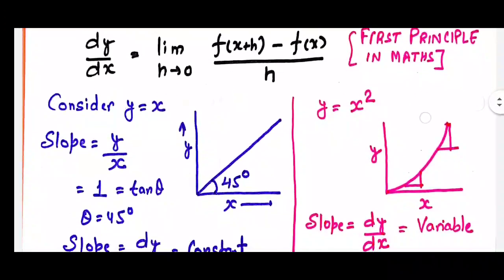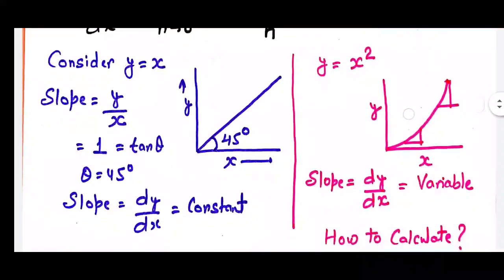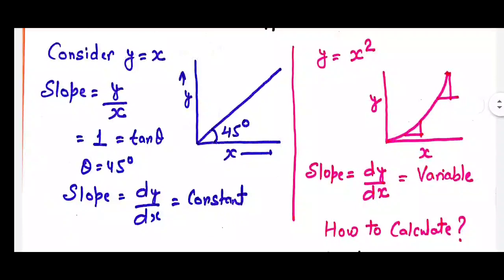I'll tell you what is the need of differentiation and how it is used in physics. On the left side, consider the equation y equal to x. If you plot y equal to x you're going to get a straight line. If you obtain the slope of this straight line, that is y upon x, it will be equal to 1. The slope equals tan theta, so it will make 45 degrees with the x-axis. The slope is known as dy upon dx, the differential coefficient of y with respect to x.